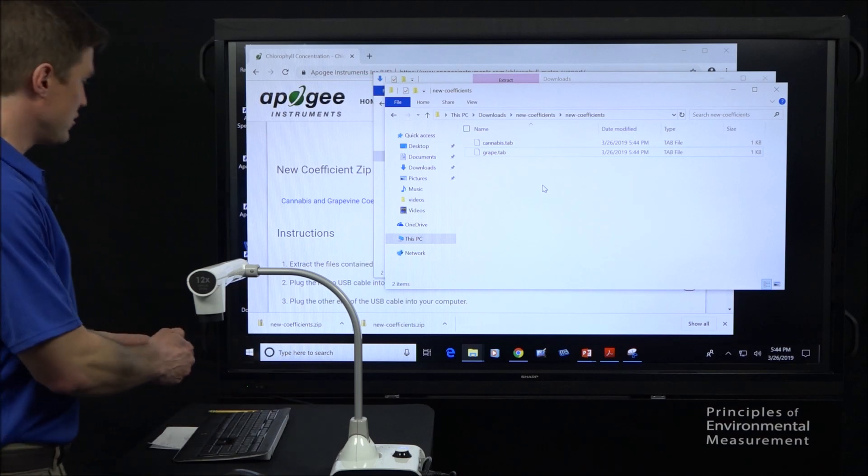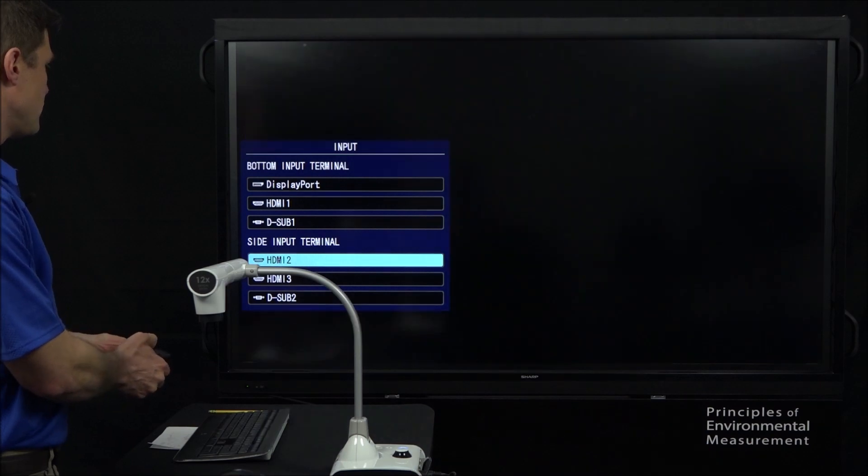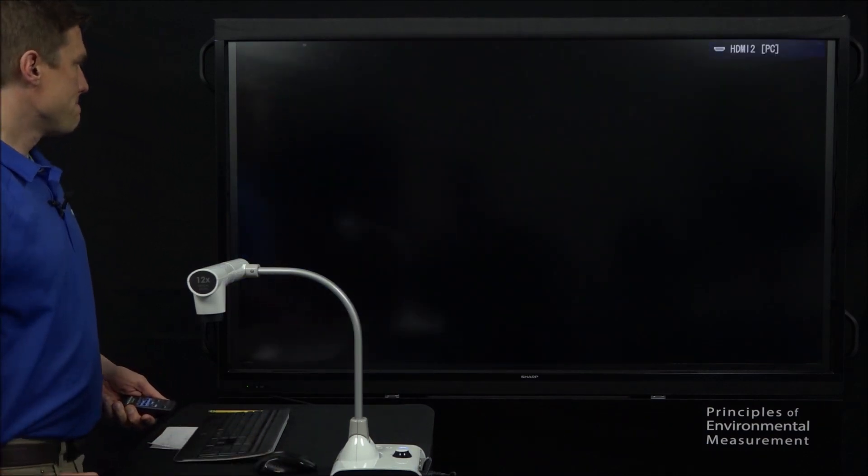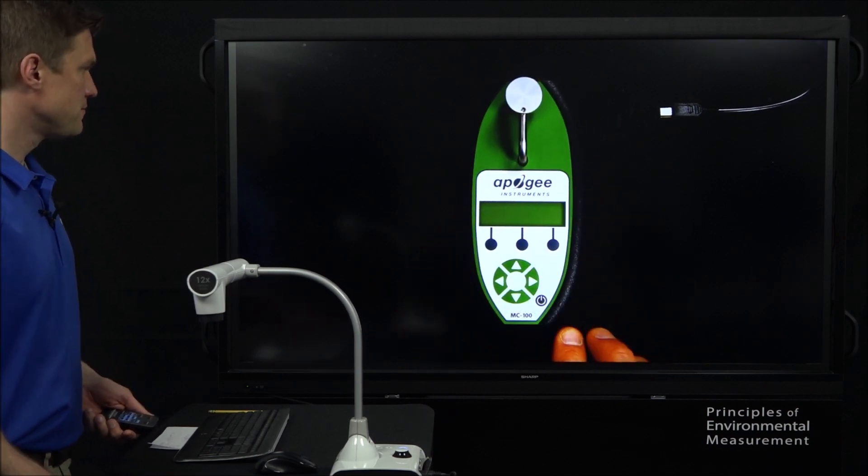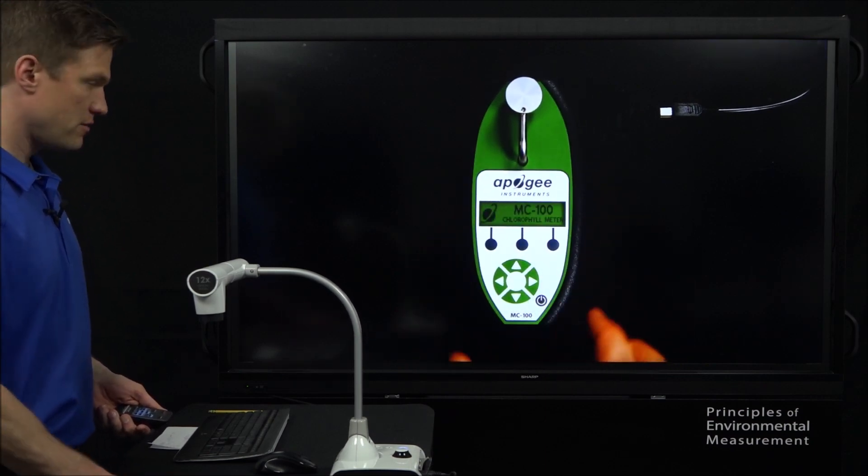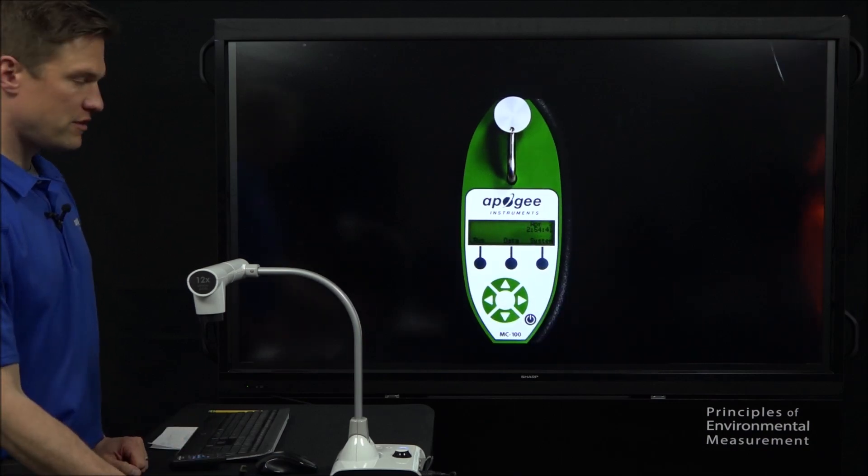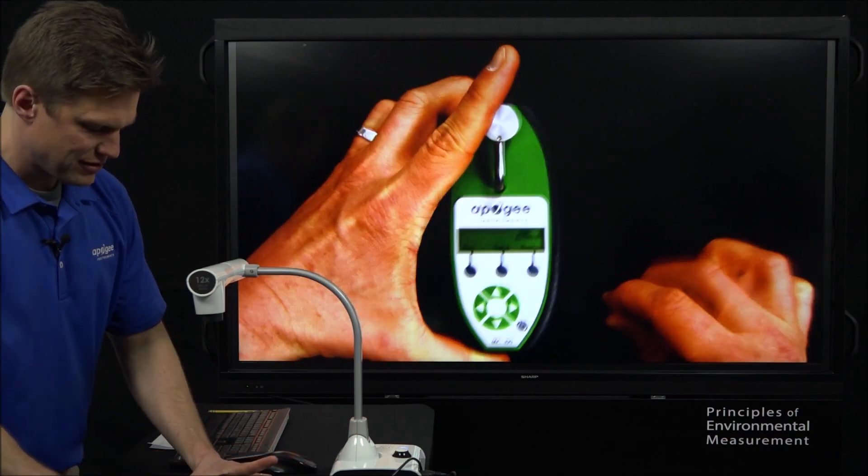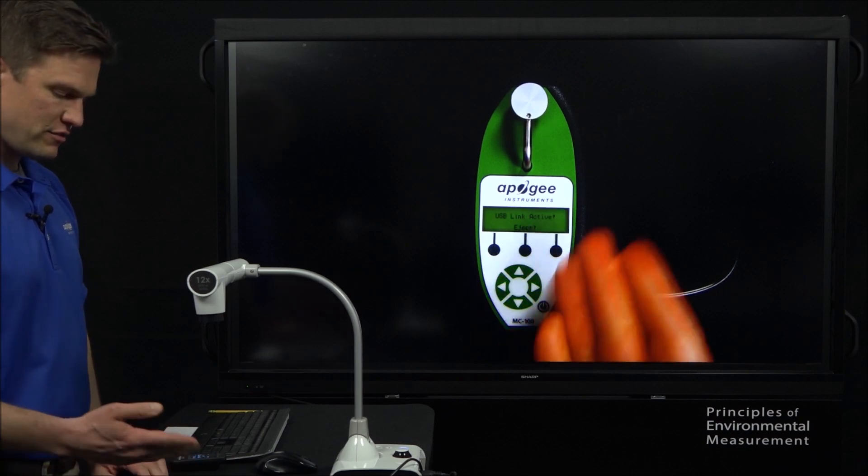So I'll quickly just move over to the display of the meter so you can see the buttons I'm pushing. So here's our meter. We'll turn it on. We plug it in with this little USB cable that it came with, the other end of which is in the computer. So now it's plugged in. You hit data and it says USB link active.